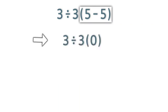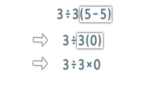We've seen a lot of people do it the following way. Look, 5 minus 5 is 0, right? It's going to be 3 divided by 3 times 0. Now 3 times 0 is 0. So finally, we have 3 divided by 0.